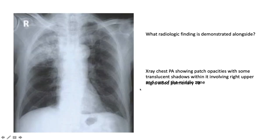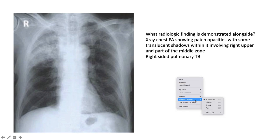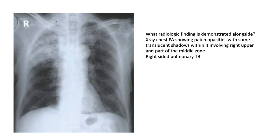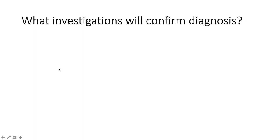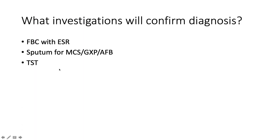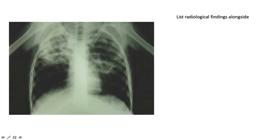This PA film shows patchy opacification with some translucent shadows involving the right upper and part of the middle zone — this speaks to right-sided pulmonary tuberculosis. To confirm: FBC with ESR, sputum for GeneXpert together with MCS and AFBs, and a tuberculin skin test.